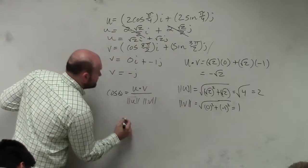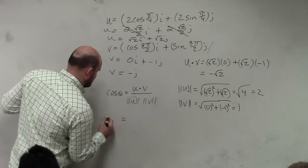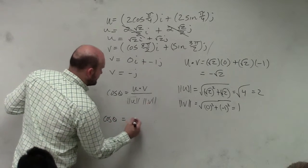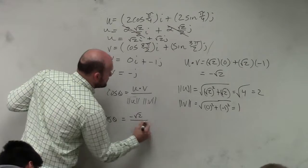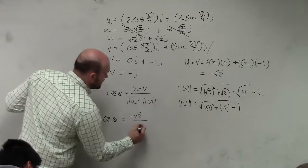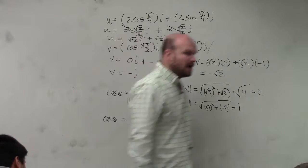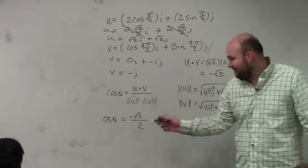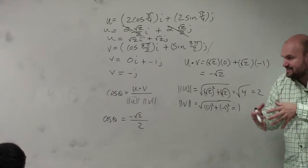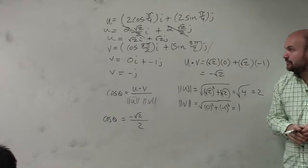So when I plug in my information, I have cosine of theta equals negative the square root of 2 divided by 2 times 1 is 2. Oh, negative square root of 2 over 2. I don't even need a calculator. Basically, it's saying what angle, cosine of what angle, gives me negative square root of 2 over 2?